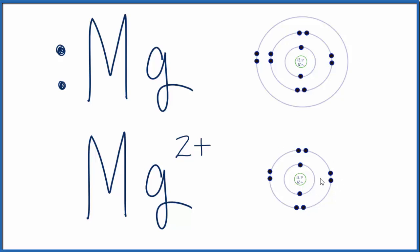That's an octet. That's very stable. So Mg will lose 2 electrons when it forms a chemical bond in order to have this full outer shell.